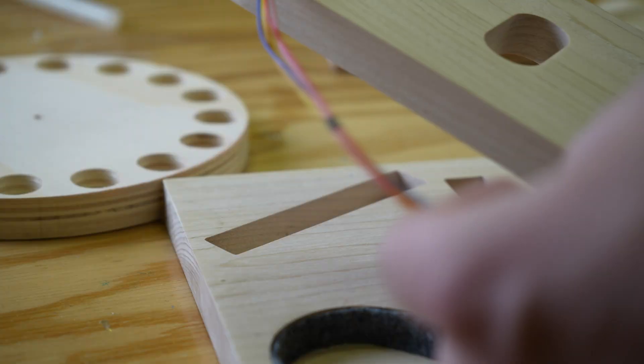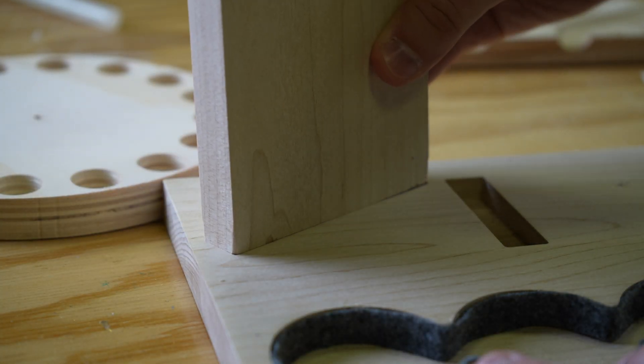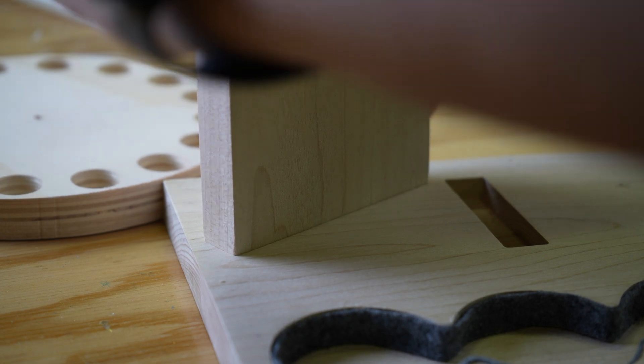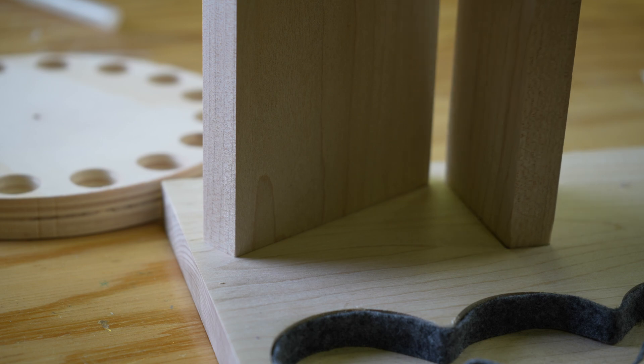It's another benefit of CNC. You can get such a tight tolerance that friction fits are just so easy to make. These columns support the rails and the tracks and the marble reservoir.